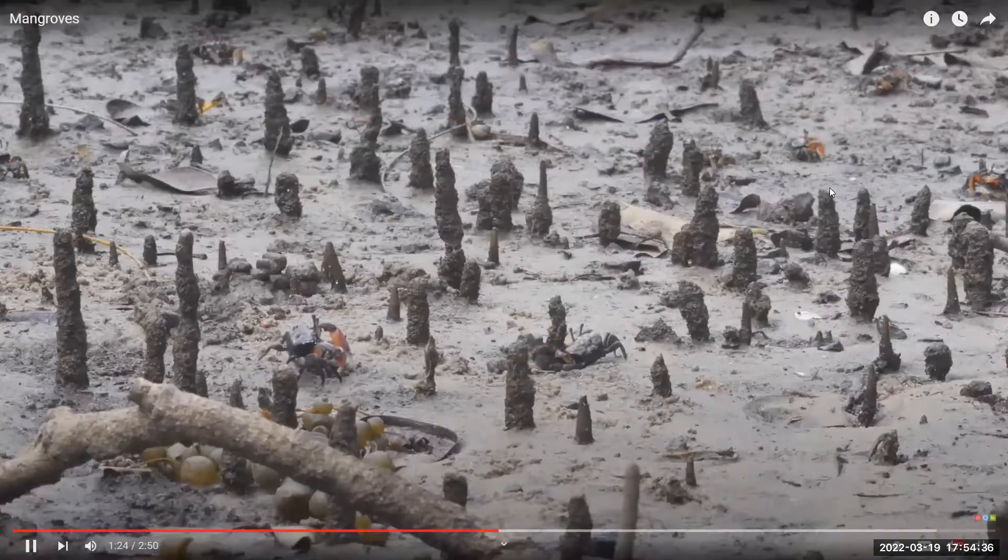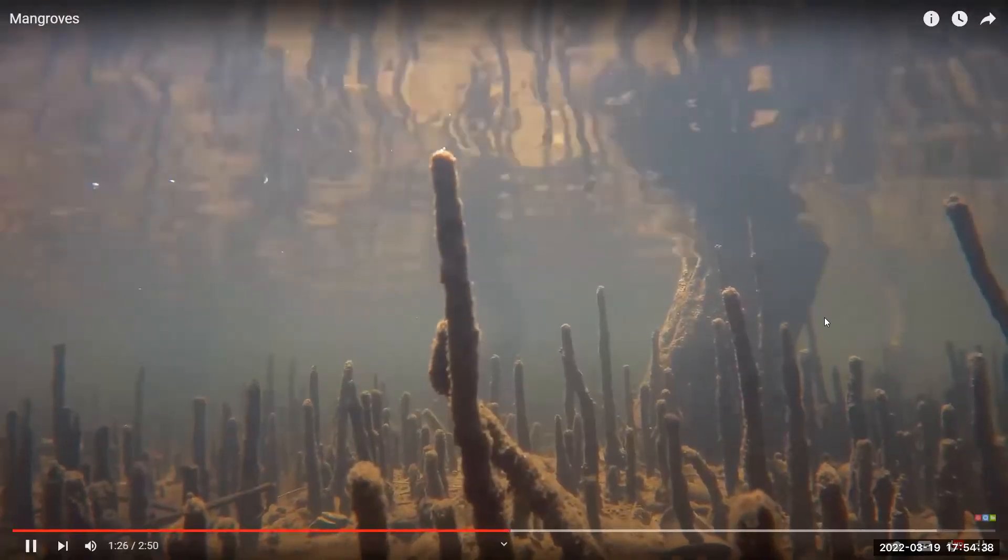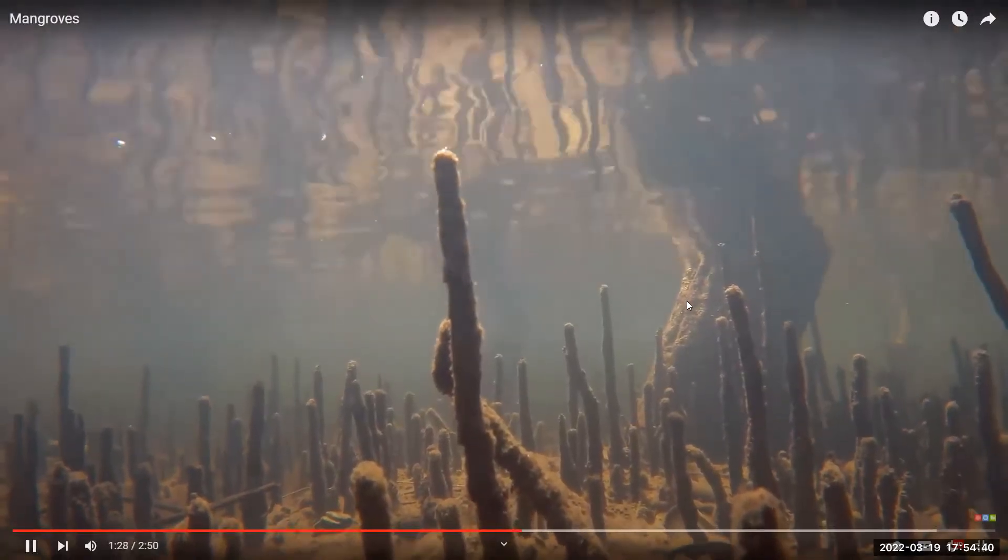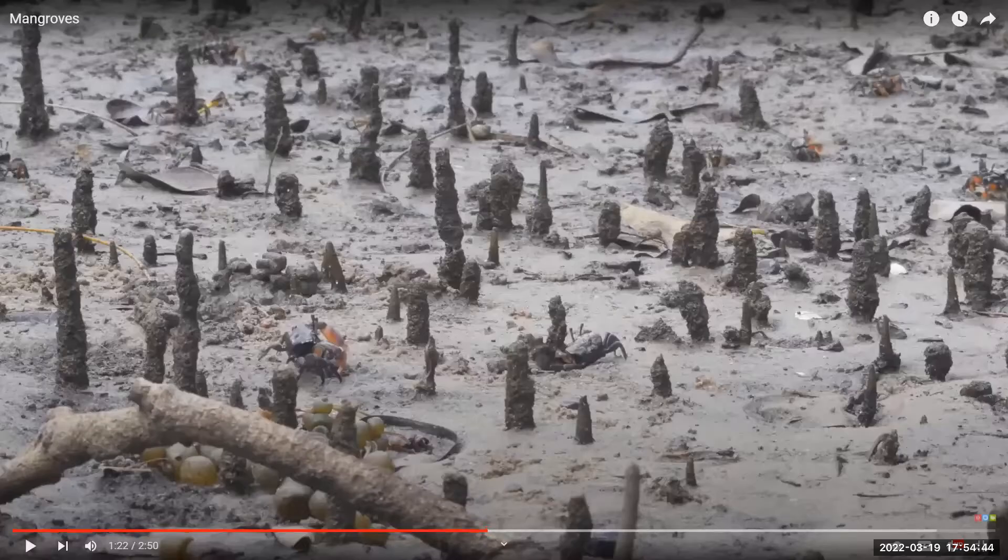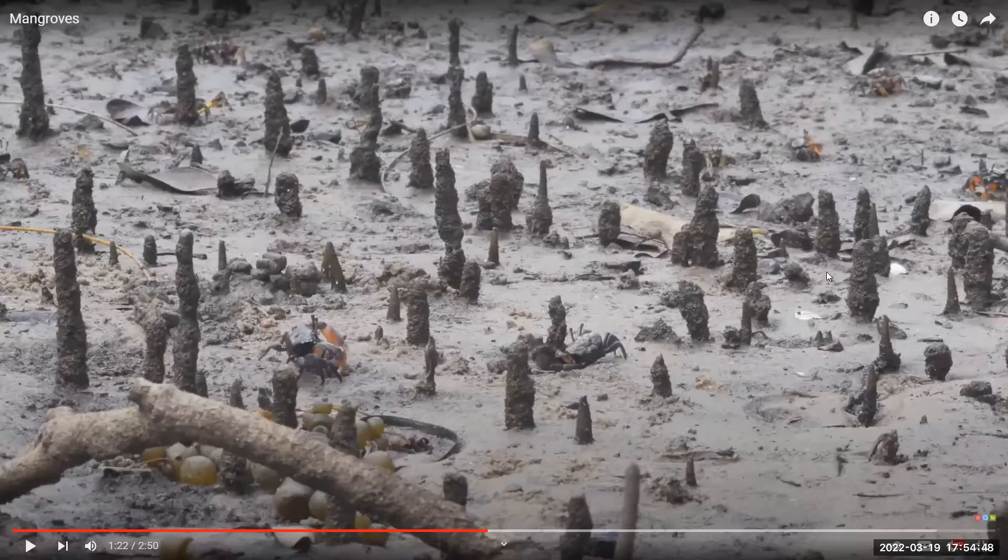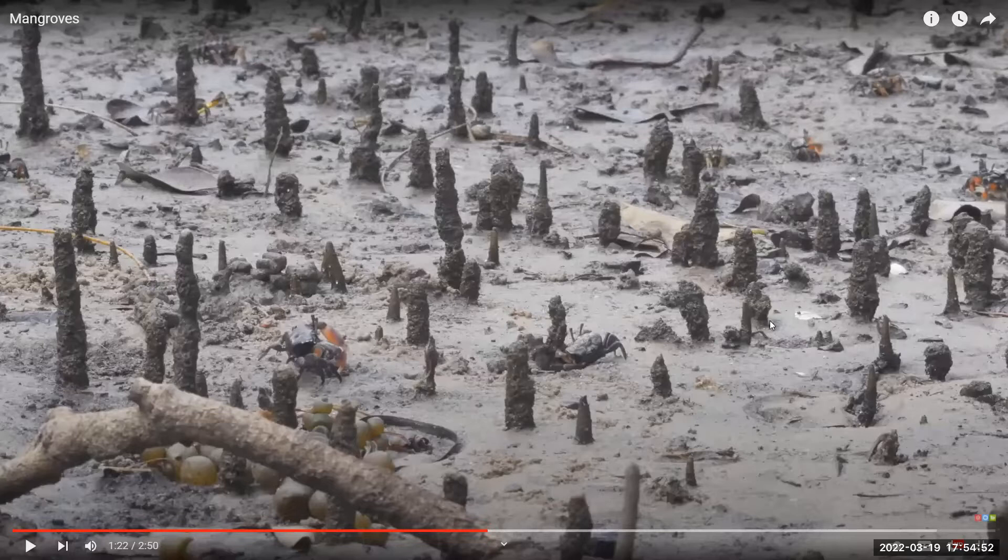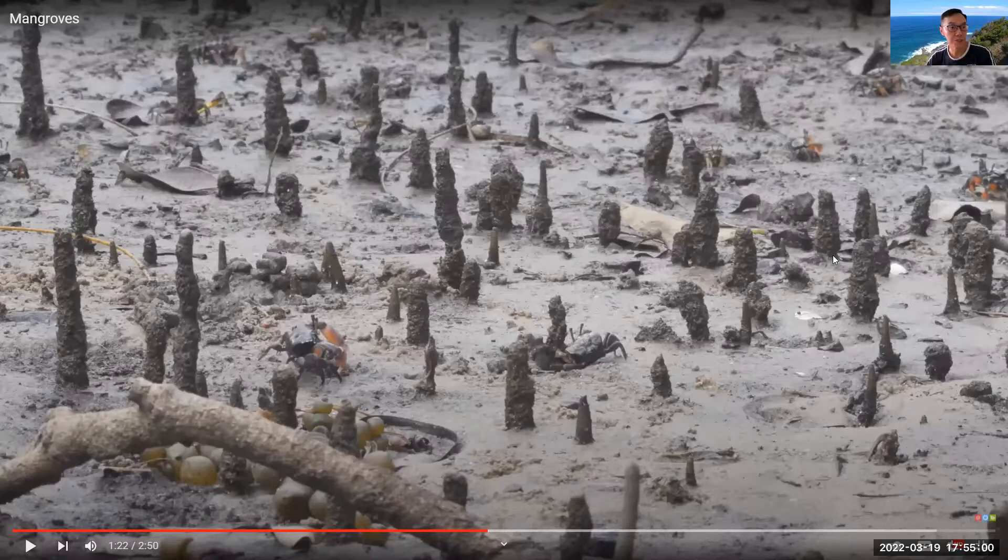To adapt to this low oxygen environment, some mangroves have specialized root structures called pneumatophores. Let me pause for a while. As explained here, roots are living parts of the mangroves so they need oxygen. In the mangrove area, the soil or the mud is constantly being submerged underwater.